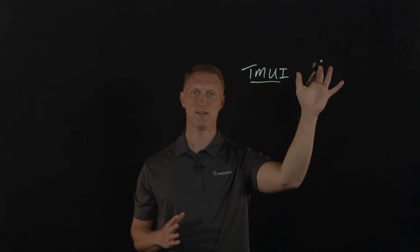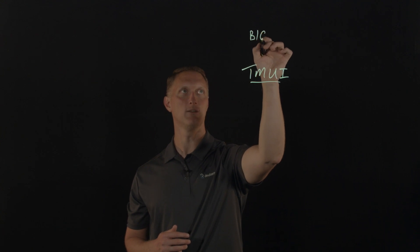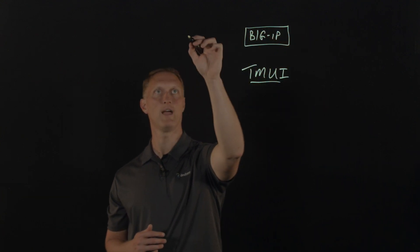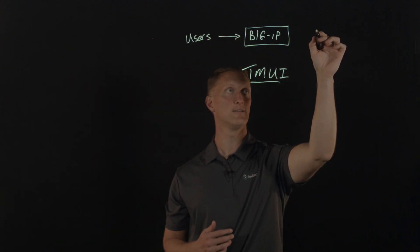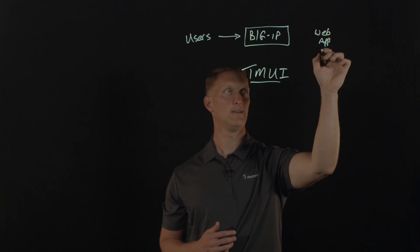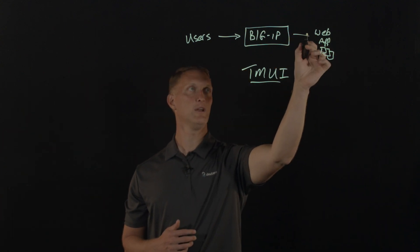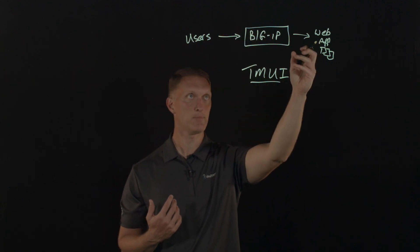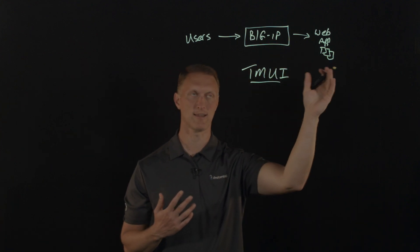I wanted to draw a quick picture of what's going on. Let's say you have your Big-IP doing awesome things in your network. You've got users out here who access your web applications — your web app is over here, maybe several instances of that. Normal traffic will come from users through the Big-IP back to your web application, and this thing processes traffic and does all kinds of stuff.